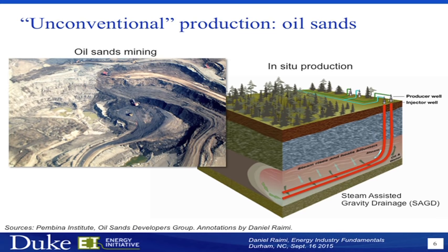One recovery process is called steam assisted gravity drainage. You have oil sands maybe 30 meters or more below ground. You pump in steam at very high pressure and high temperature, which helps the oil and gas trapped in the oil sands to flow more easily. Once the oil becomes heated up enough and liquid enough, it begins to flow back to the surface. There are two wells going down: one pumping down steam, the other pumping out oil. This is actually how most of the oil sands will be recovered over the next few decades.